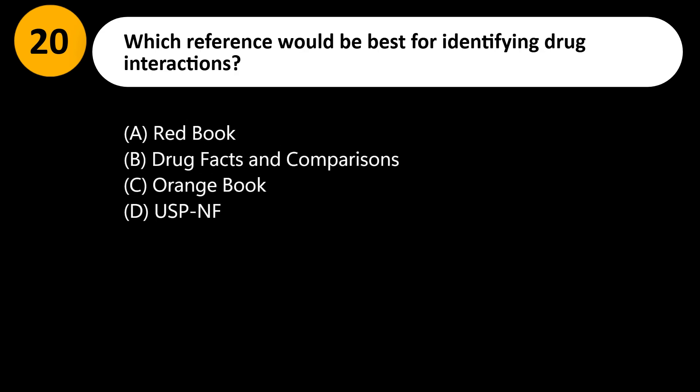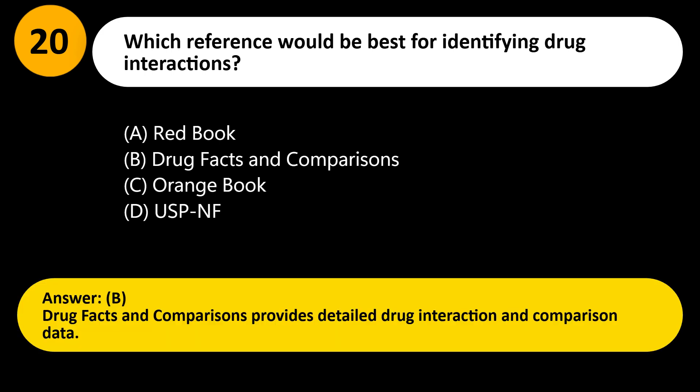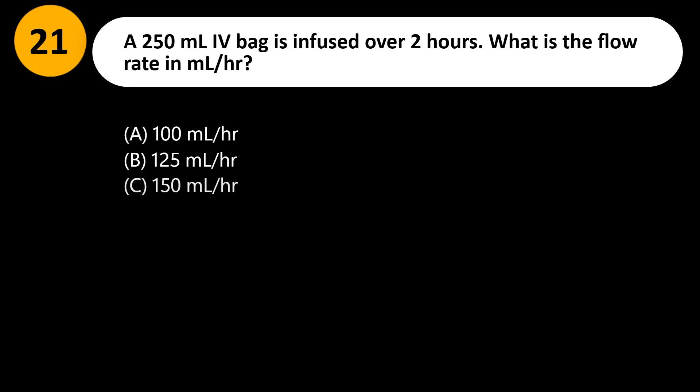Which reference would be best for identifying drug interactions? A) Red Book, B) Drug Facts and Comparisons, C) Orange Book, D) USP-NF. Answer: B. Drug Facts and Comparisons provides detailed drug interaction and comparison data.